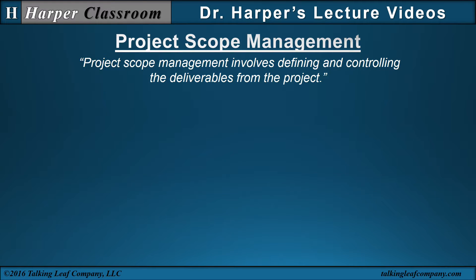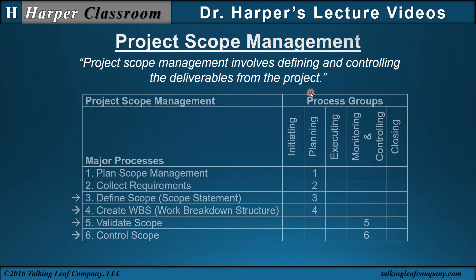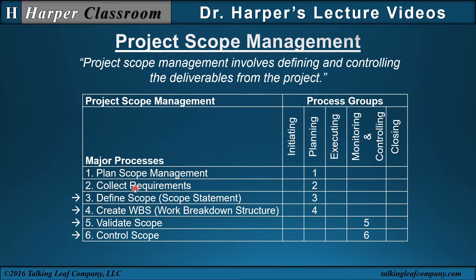Project Scope Management involves defining and controlling the deliverables from the project. It contains six major processes. This video will focus on Processes 3, 4, 5, and 6, with an emphasis on the Scope Statement and the Work Breakdown Structure.